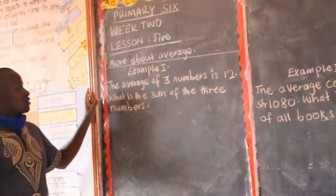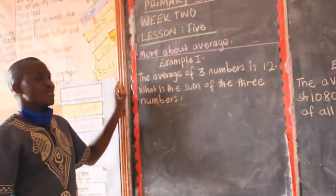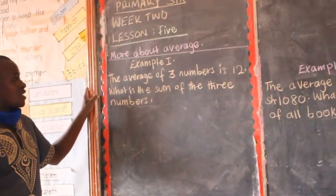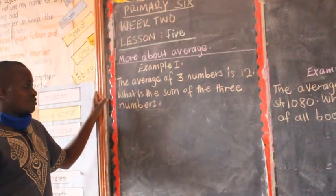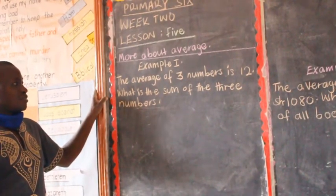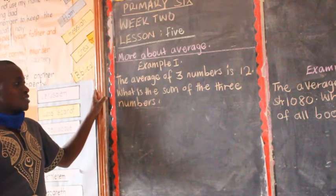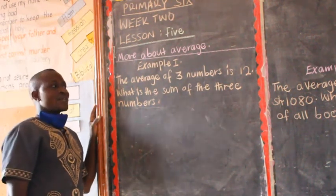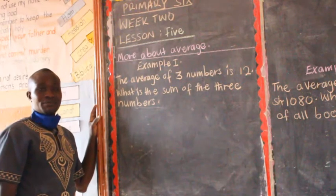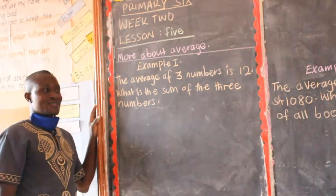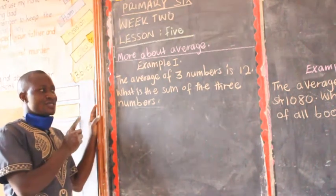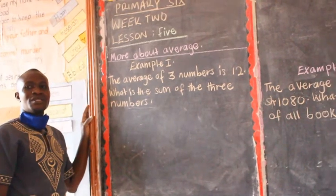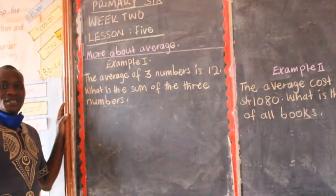The first example says: the average of three numbers is 12. What is the sum of the three numbers? The question is requesting us to get the sum of the three numbers. So we are going to let any unknown represent the sum of the three numbers.